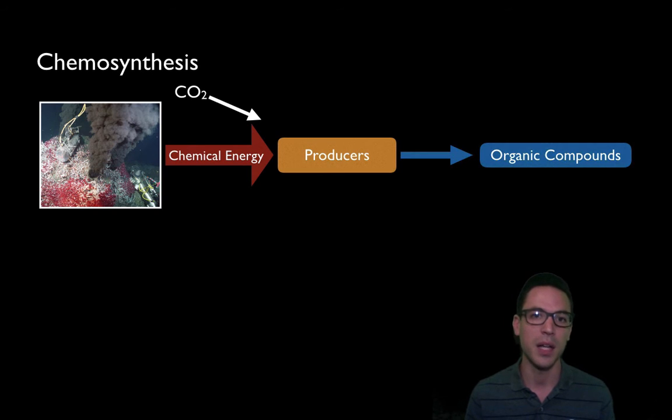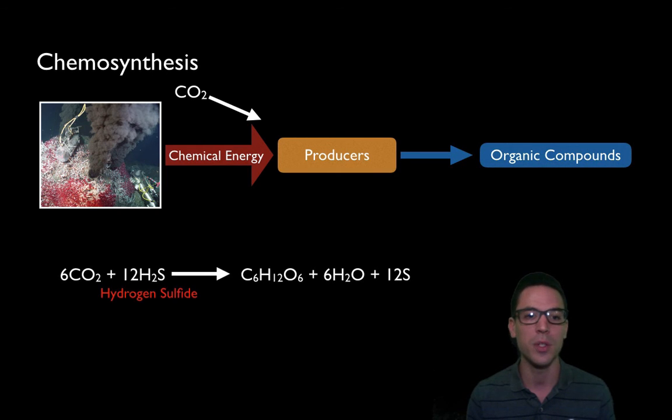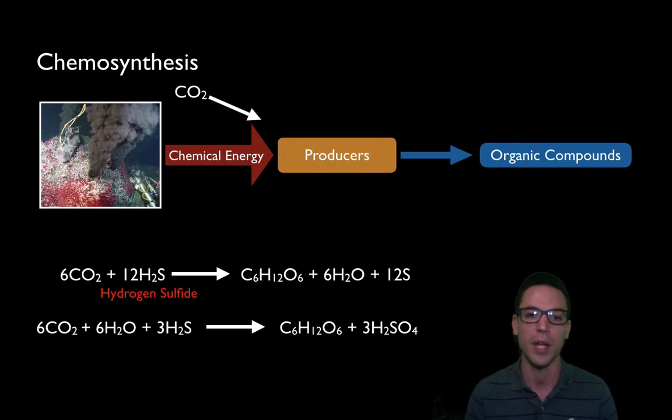Now chemosynthesis is not as simple as photosynthesis in terms of a formula. There's not just one. There's plenty out there. Just to name a couple, though, that you should be somewhat familiar with. One of the more common ones is seen here. We can use carbon dioxide and then hydrogen sulfide. This is one of the more prominent inorganic molecules that comes out of hydrothermal vents. That has a lot of energy stored in it. And they'll use that to create glucose, water, and then sulfur. We could also do a very similar one where we're using carbon dioxide, water, and again, hydrogen sulfide to create glucose, and this time H2SO4, which is sulfuric acid. So you don't have to memorize these, but you should be familiar with hydrogen sulfide as one of the ways that we have chemical energy stored and these producers, these bacteria, release that energy and put it into organic molecules like glucose.